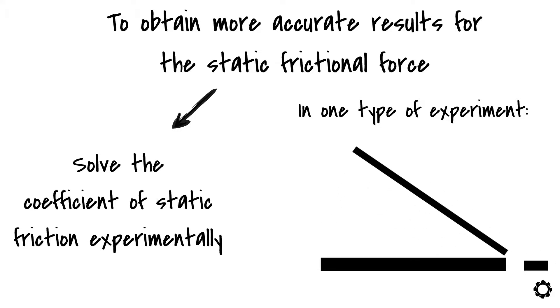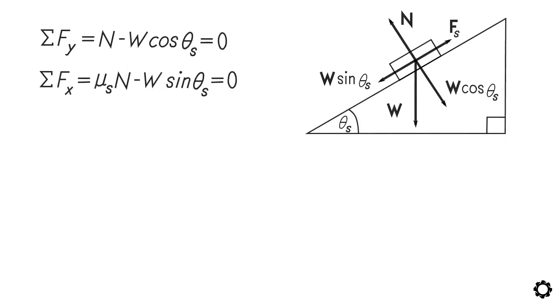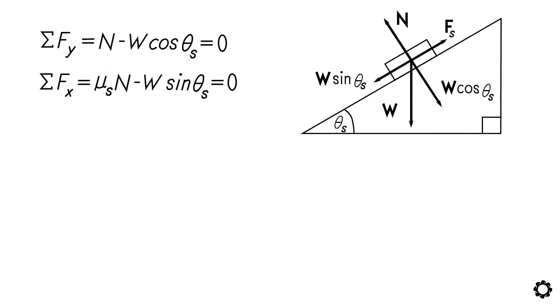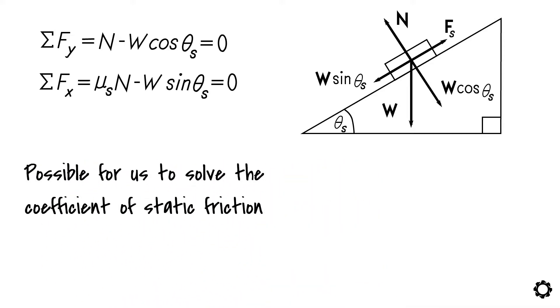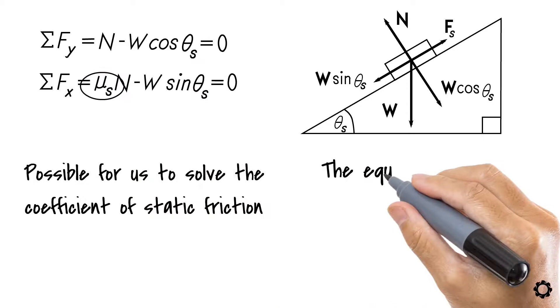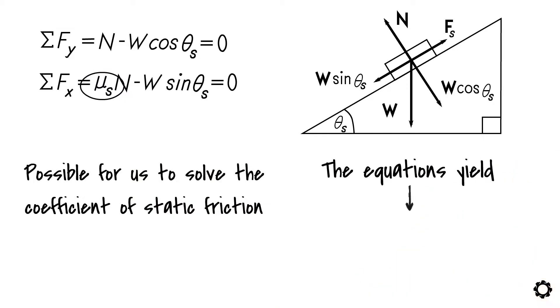At the same moment, we also measure the inclination angle, theta s. By applying the following equilibrium equations, it's possible for us to solve the coefficient of static friction mu s. The equation yields the following solution: mu s equals w times sine theta s divided by w times cos theta s equals tan theta s.